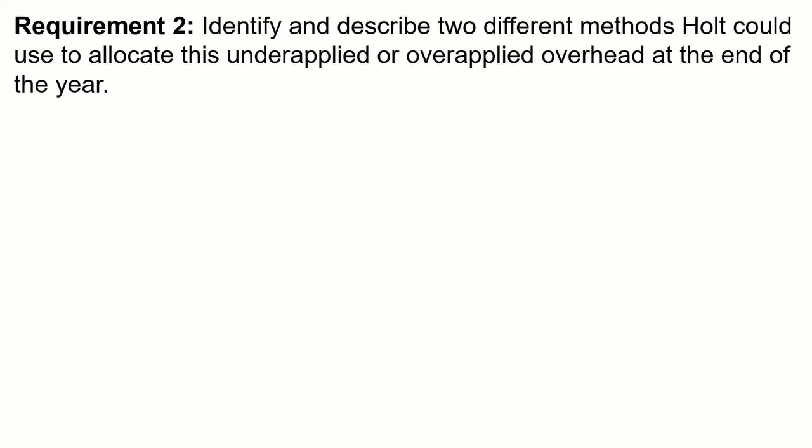Requirement two: identify and describe two different methods to allocate the underapplied or overapplied overhead at year end. This is about the distinction between material and immaterial amounts. If immaterial, we put it all into cost of goods sold. If material, we allocate it to ending work in process, ending finished goods, and cost of goods sold. Those are the two methods: pro rata (proration) and closing the amount directly to cost of goods sold.